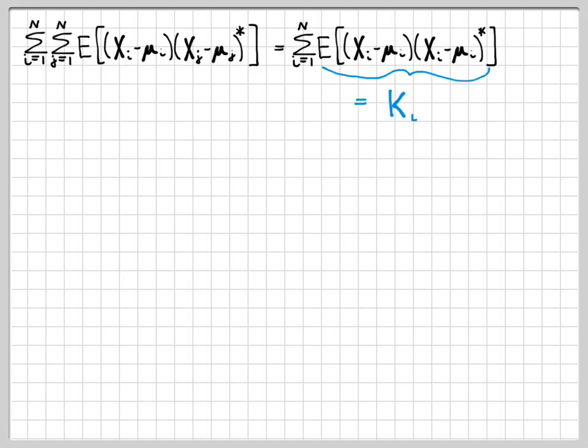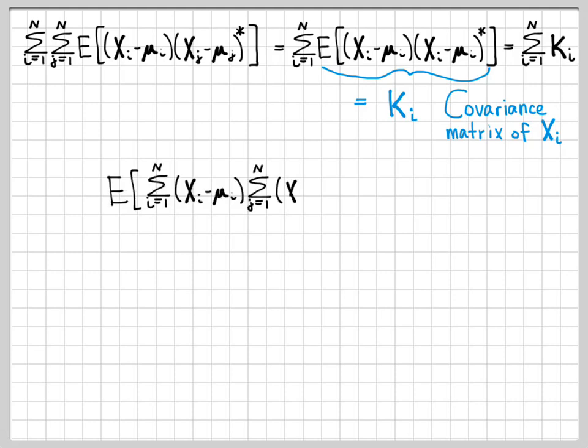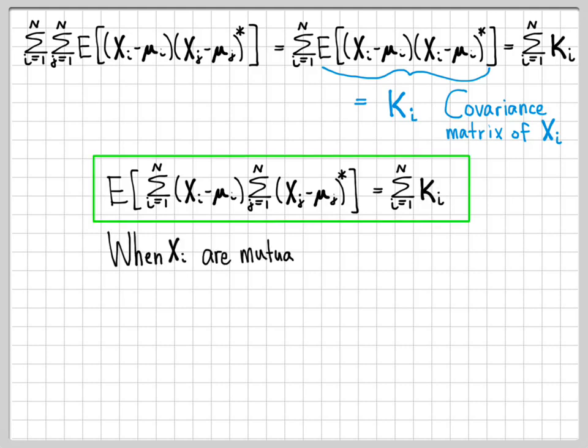So now we ask ourselves, what is this? Well, this, by definition, is just the covariance matrix of the vector Xi. So this simplifies quite a bit. We can now write this as just the sum from i equal 1 to N of Ki. So what we've established here is that this original starting expression is actually equal to the sum of covariance matrices for the special case when the Xi are mutually uncorrelated. And that is something special to note. This doesn't always happen, but it does happen when the Xi are mutually uncorrelated.